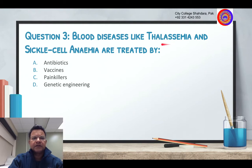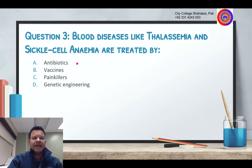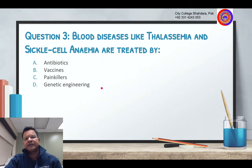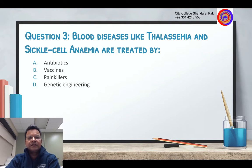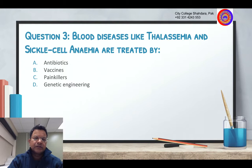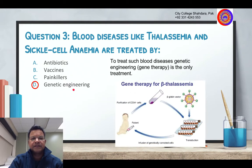Blood diseases like thalassemia and sickle cell anemia are treated by — the options are antibiotics, vaccines, pain killers, or genetic engineering techniques. That's right — genetic engineering.